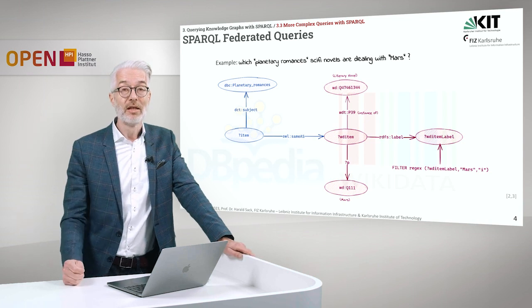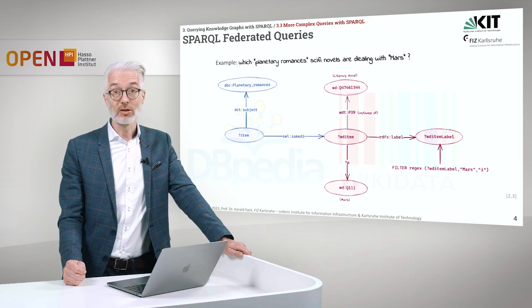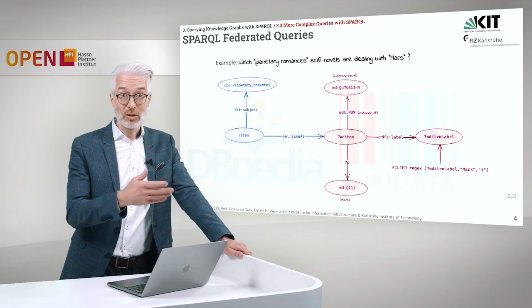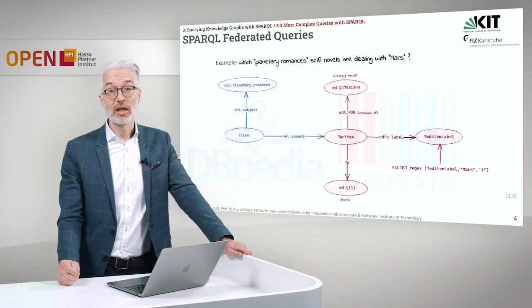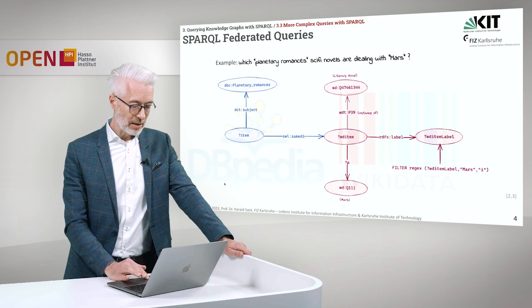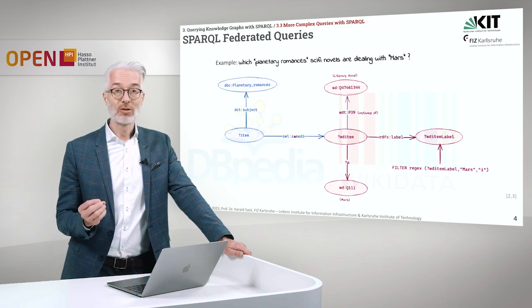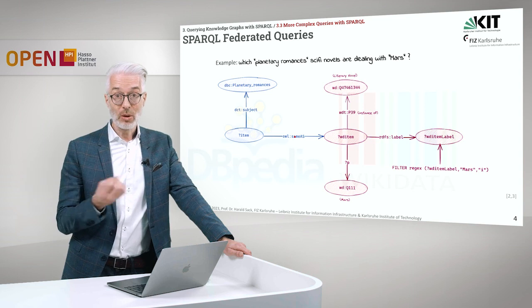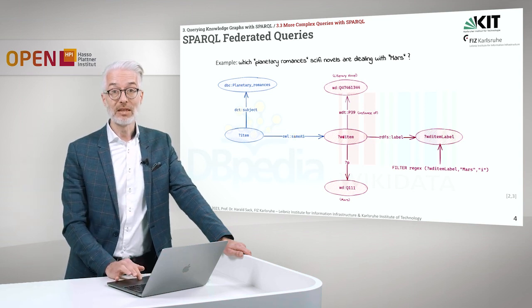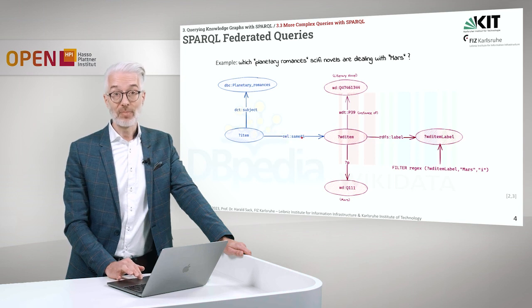In query federation — and this is of course a nice property of SPARQL — you can connect two different data sources, two knowledge graphs together, by connecting items which have the same identifier or which are the same. Of course, they have to be denoted to be the same. This can be expressed via OWL sameAs. We haven't talked so far about OWL, but this simply tells you about the identity of two entities. So here item and WD item — that's the item in DBpedia and that's the item in Wikidata — they are identical whenever there is a connection between them which says OWL sameAs.